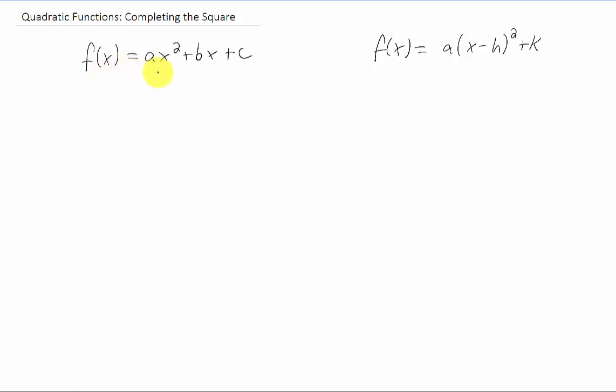In the previous two videos, we saw two different forms for quadratic functions. In this form over here, we can see that we have a basic x squared function. The h shifts it left and right, the k shifts it up and down, the a makes it skinnier or wider, or it can flip the function over the x axis.